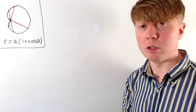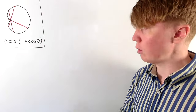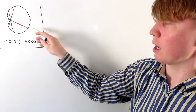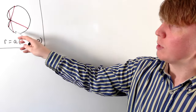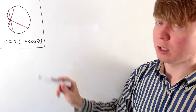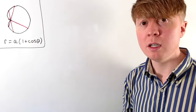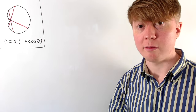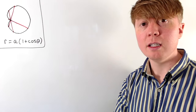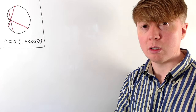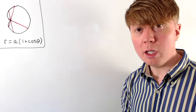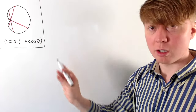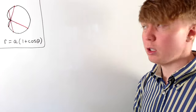If we draw a chord passing through the origin — like any of these red lines here — which meets our cardioid at either end, it turns out that all of these chords have the same length. So the length is constant. There's quite a nice way of seeing this just from the definition of our curve.